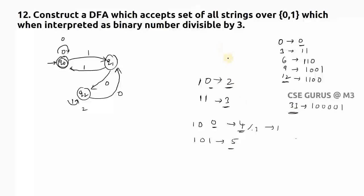Verification with 11 (binary 1011): 11 divided by 3 gives remainder 2, so it must end in q2. Tracing: q0 → q1 (1) → q2 (0) → q2 (1) → q2 (1). Ends in q2 — the 2-remainder state, as expected. This completes the construction and verification of the DFA for binary numbers divisible by 3. More questions will be covered in the next video.